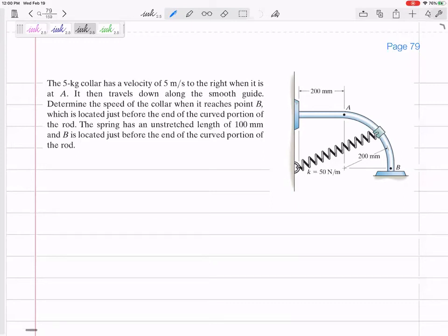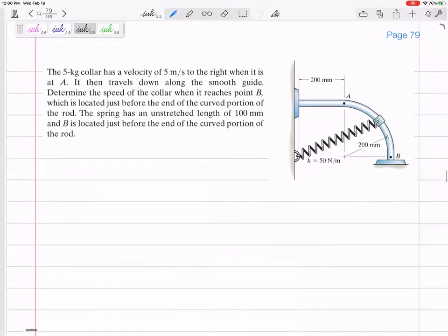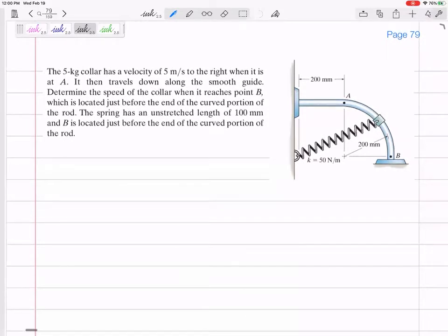We're in the section on work and energy. There's two ways to organize your thoughts: sum of all work equals change of kinetic energy, or conservation of energy. All the kinetic and potential energy initially plus any work that we add to our system equals the sum of the potential and kinetic energy you find. So, let's look at this problem in our notes.